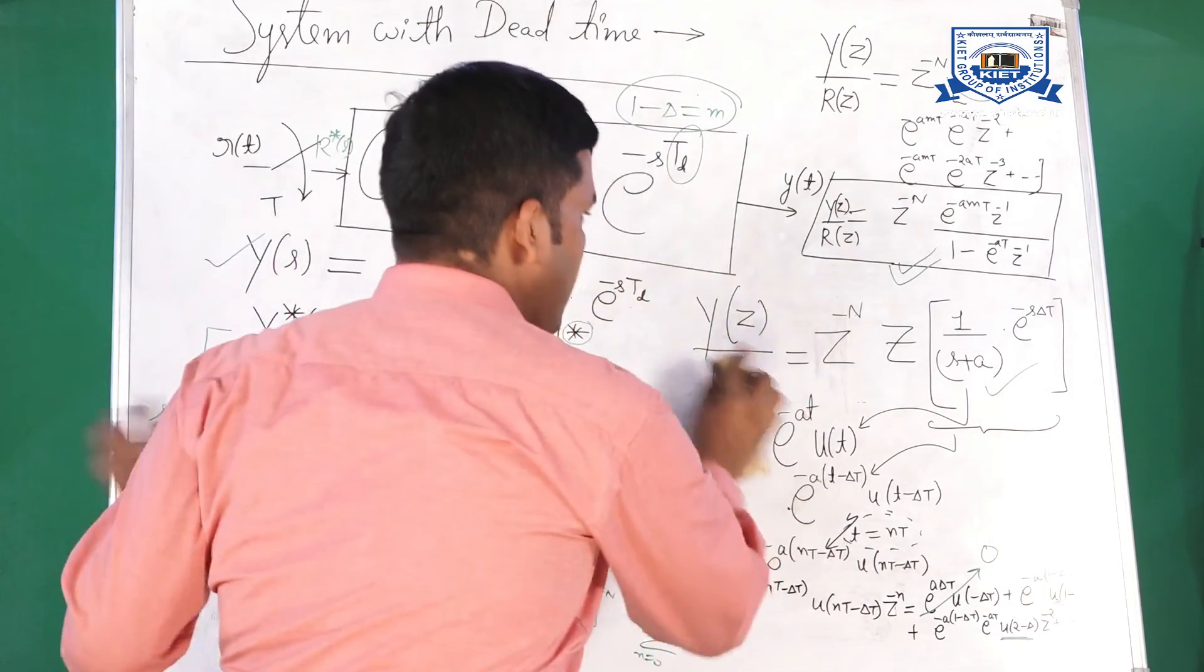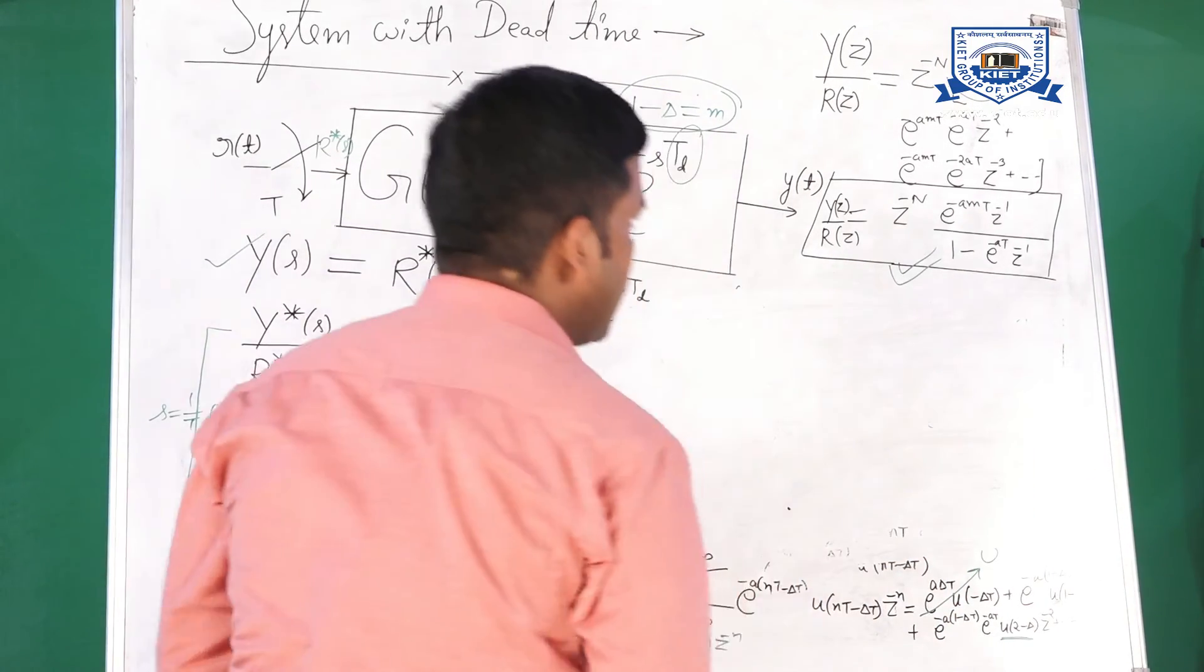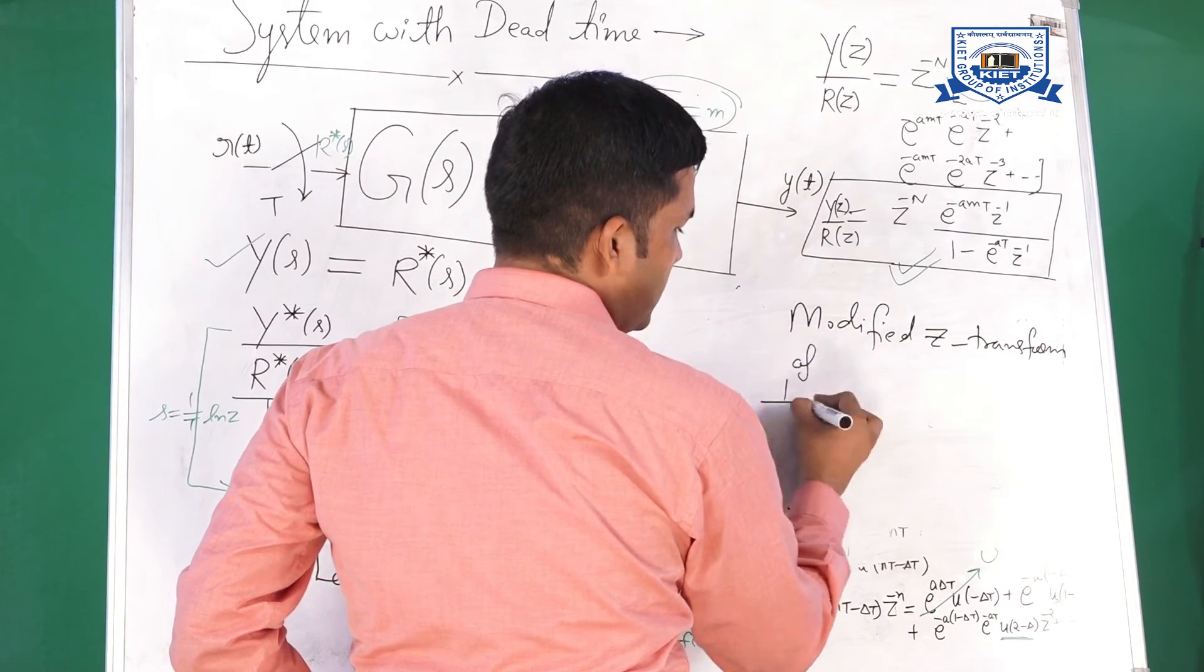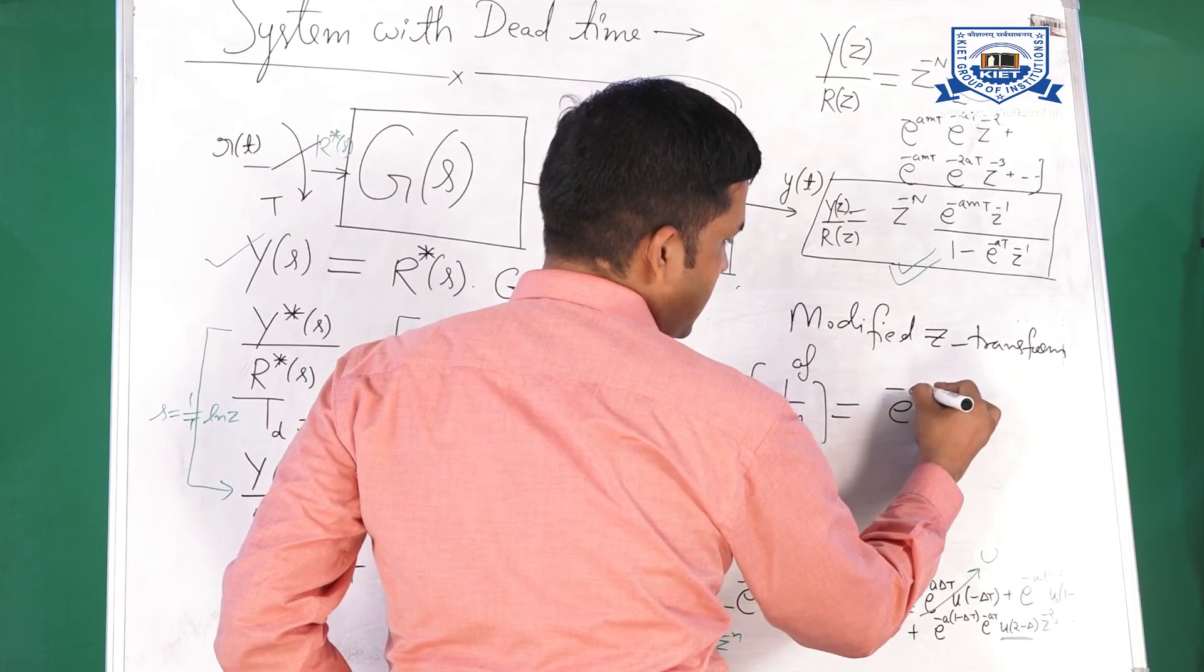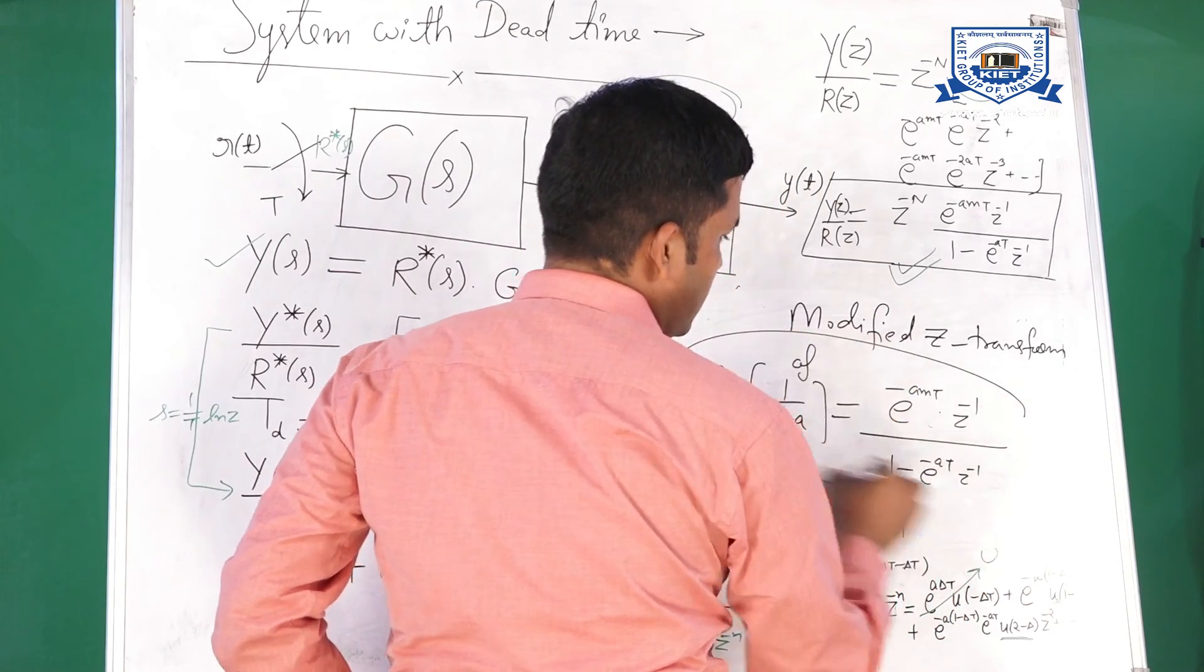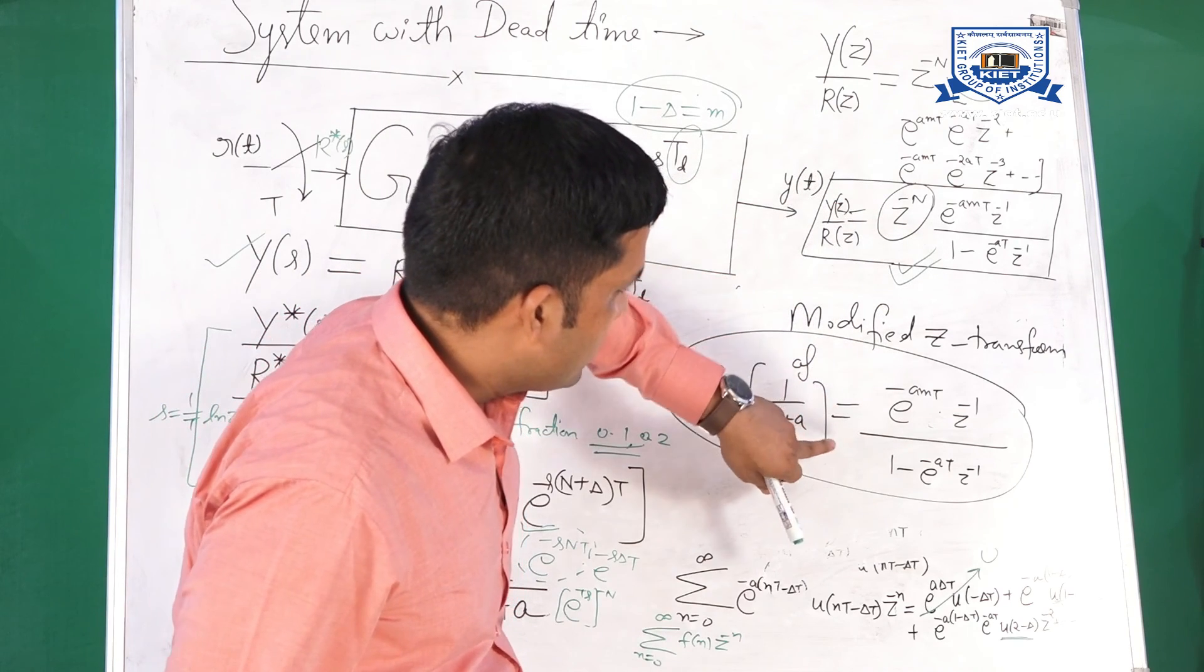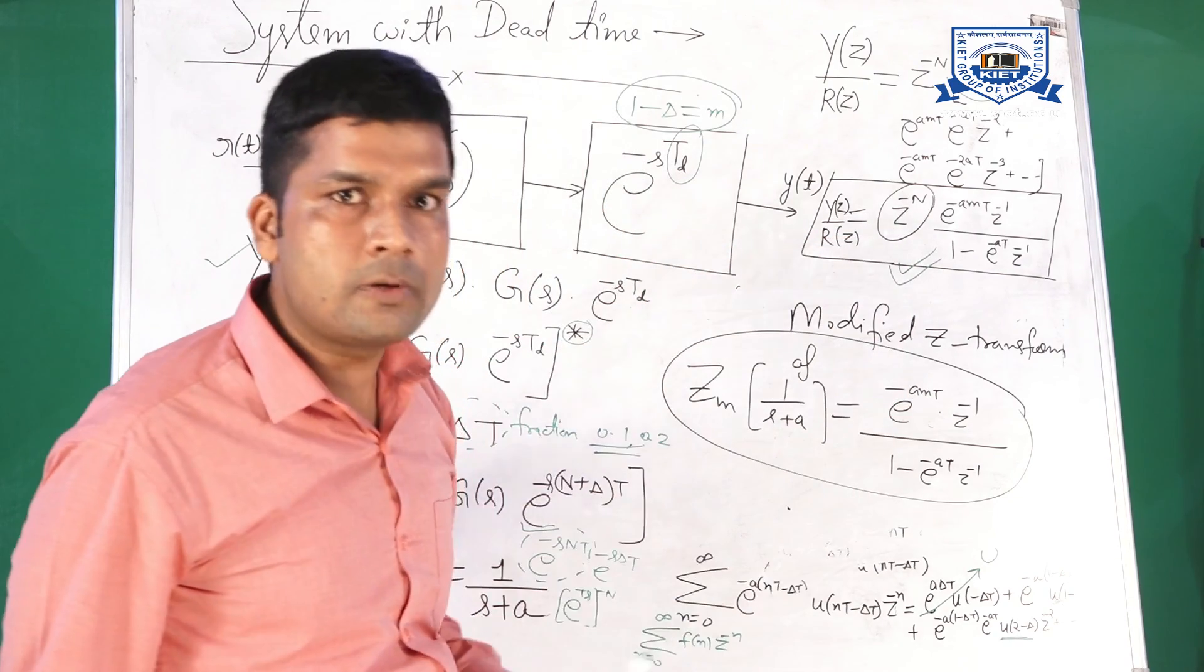If any student will find modified Z transform of 1 upon s plus a, then we will get modified Z transform of 1 upon s plus a will be equal to e to the power minus amt into z inverse upon 1 minus e to the power minus z inverse. But remember this is the generalized version in which we have taken integer value also. So in modified Z transform we get this, but in generalized formula Z to the power minus n is also included. Thank you.